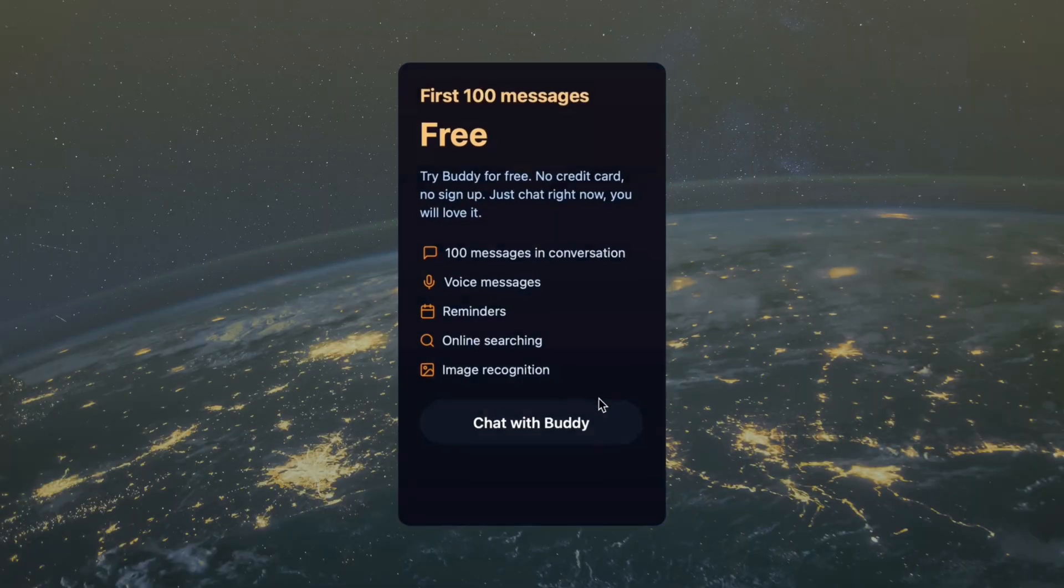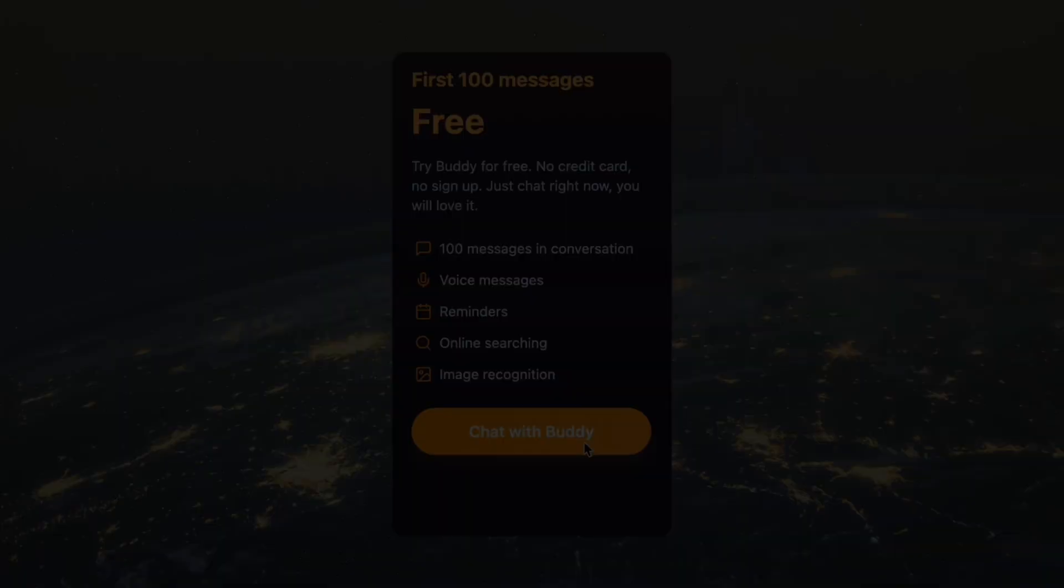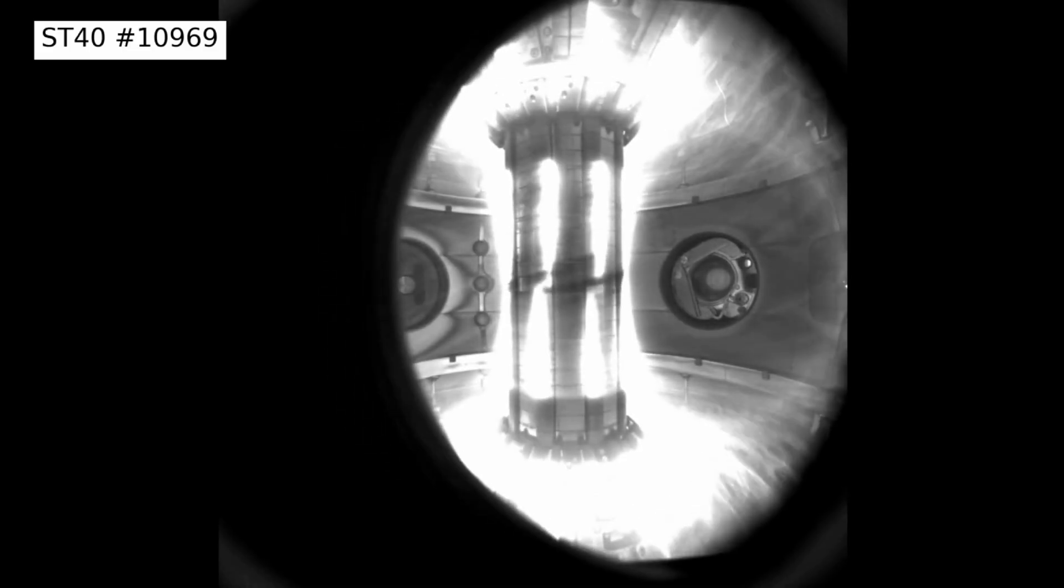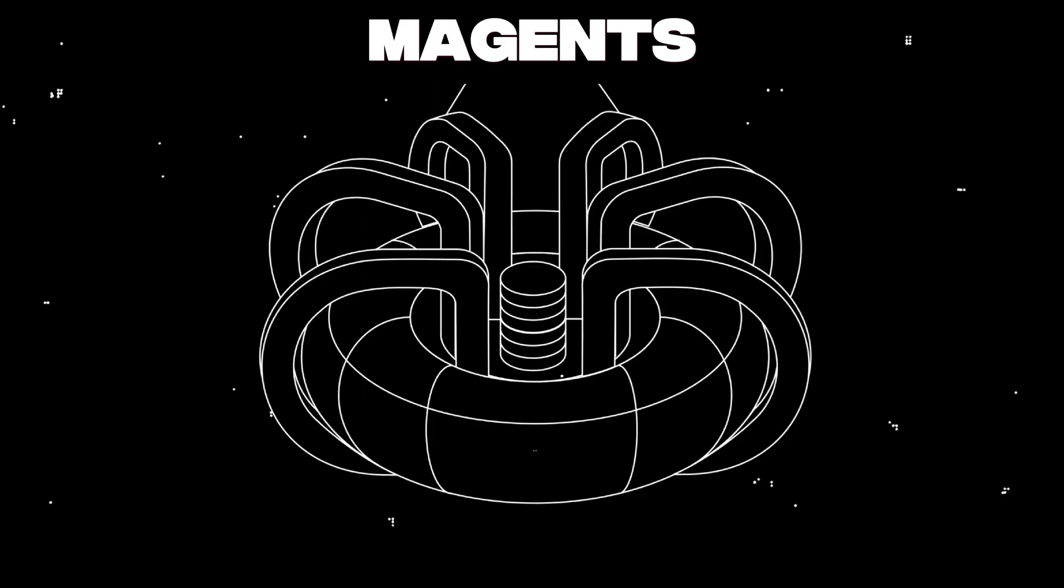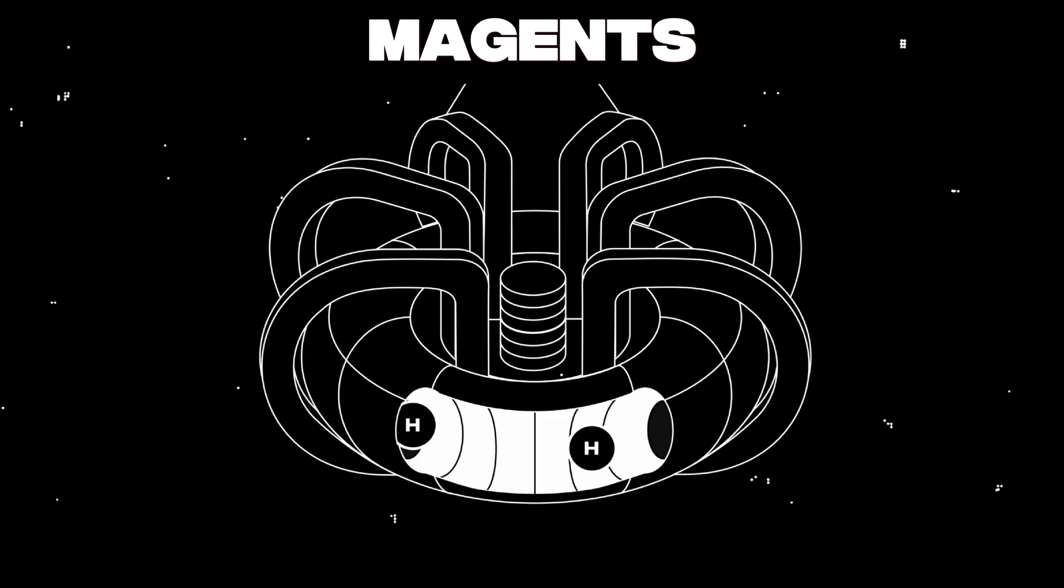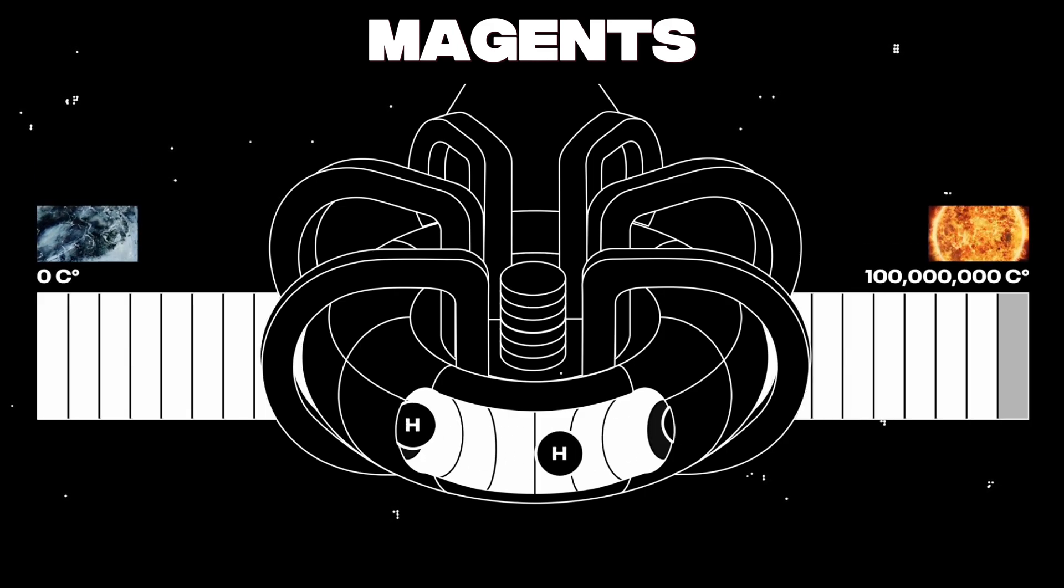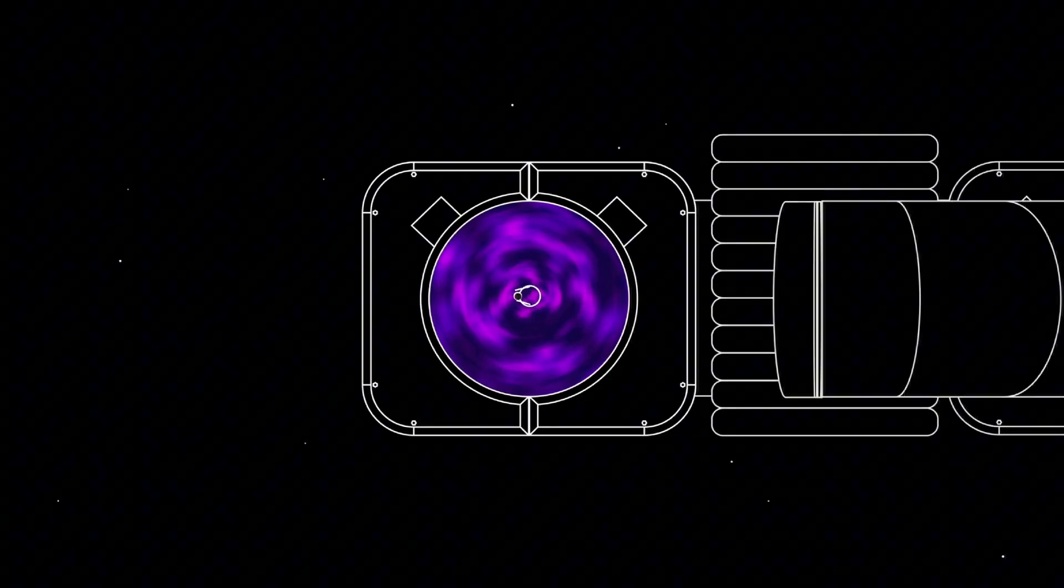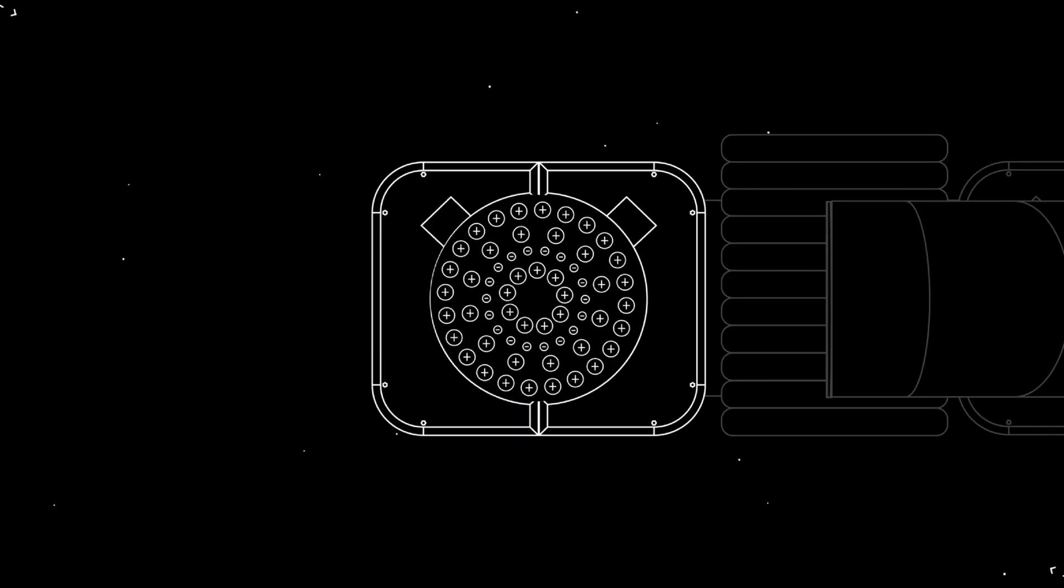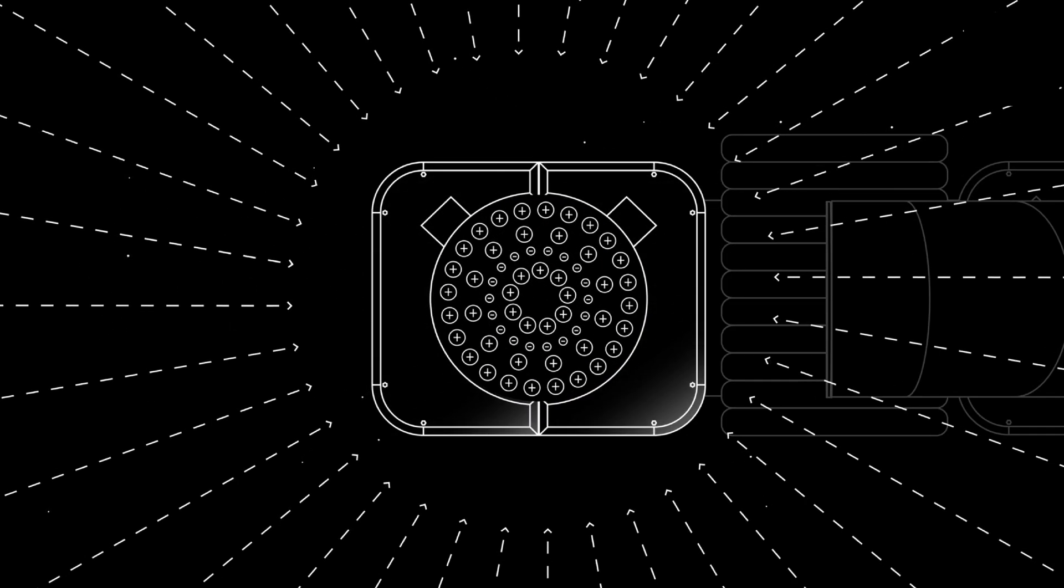In tokamak-type nuclear fusion reactors, exceptionally strong superconducting magnets are used to confine the hot plasma at a temperature higher than 100 million degrees Celsius. In such a plasma, the nuclei of light elements fuse, generating an enormous amount of energy similar to the sun.